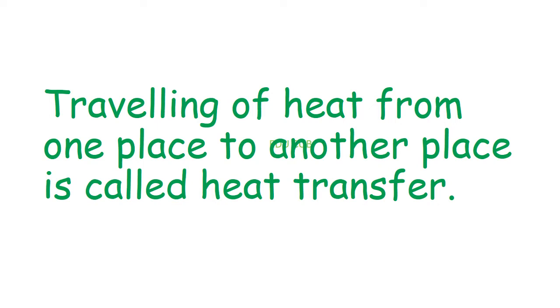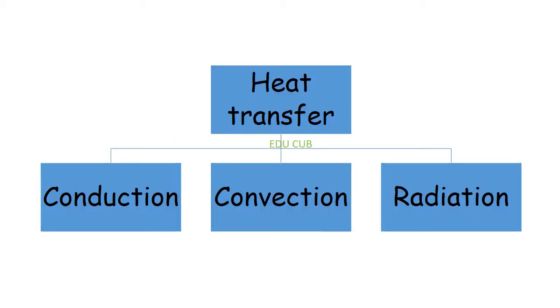The traveling of heat from one place to another place is called heat transfer. There are three methods of heat transfer: they are conduction, convection, and radiation. Let's see what conduction is.